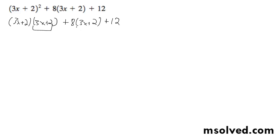And because we share a common factor here, we can regroup it. So this becomes 3x plus 2 times 3x plus 2 plus 8 and then plus 12 out here.